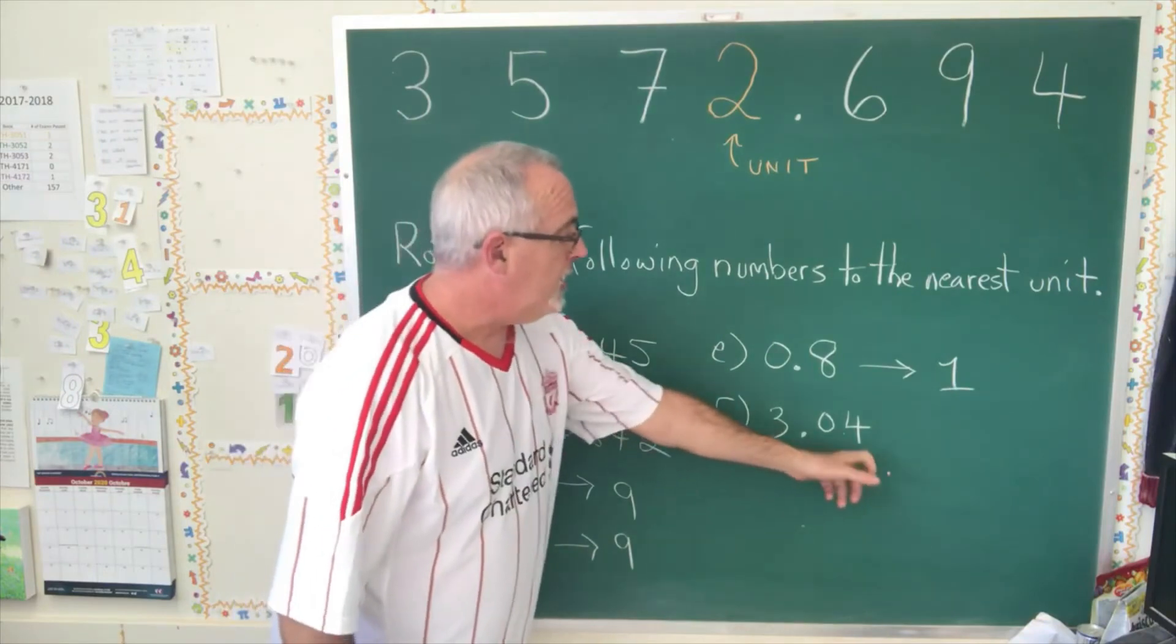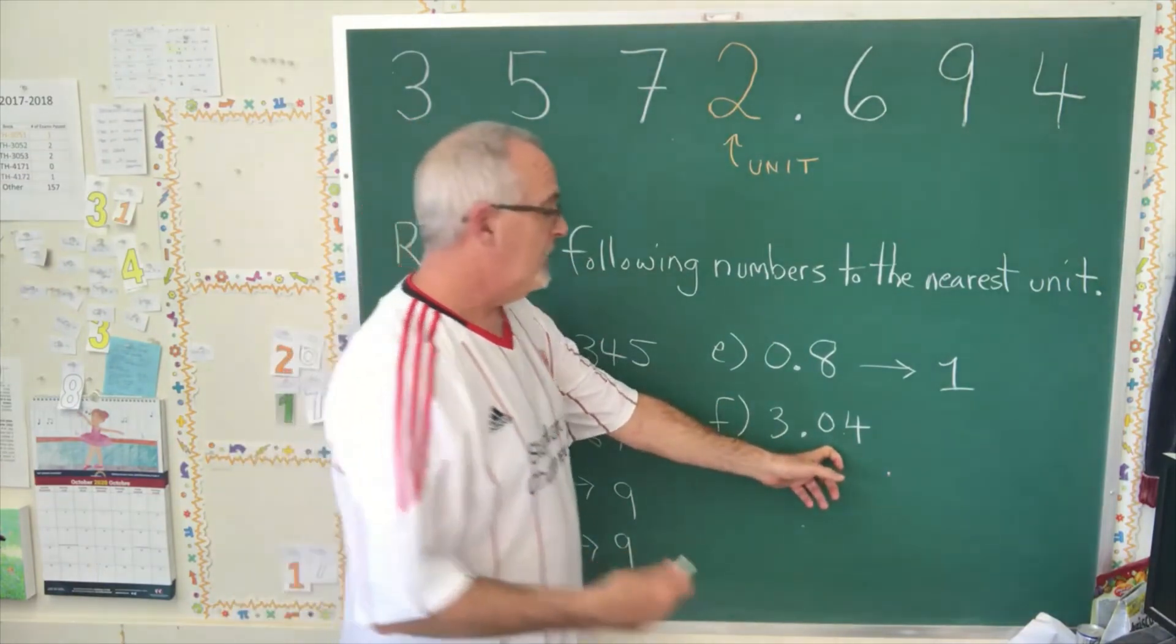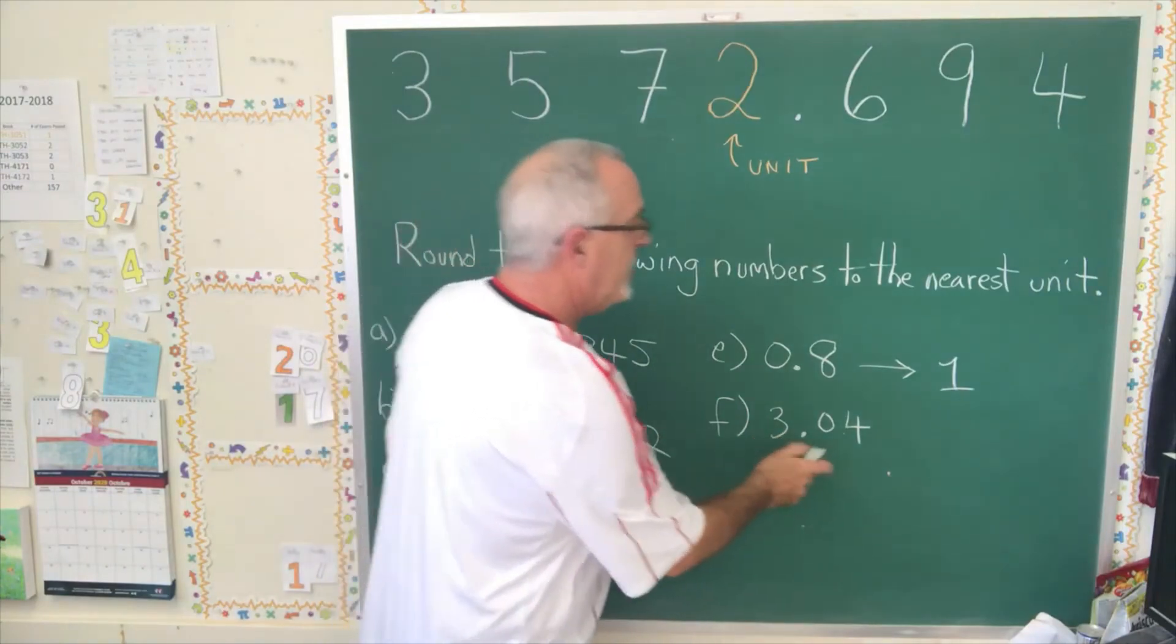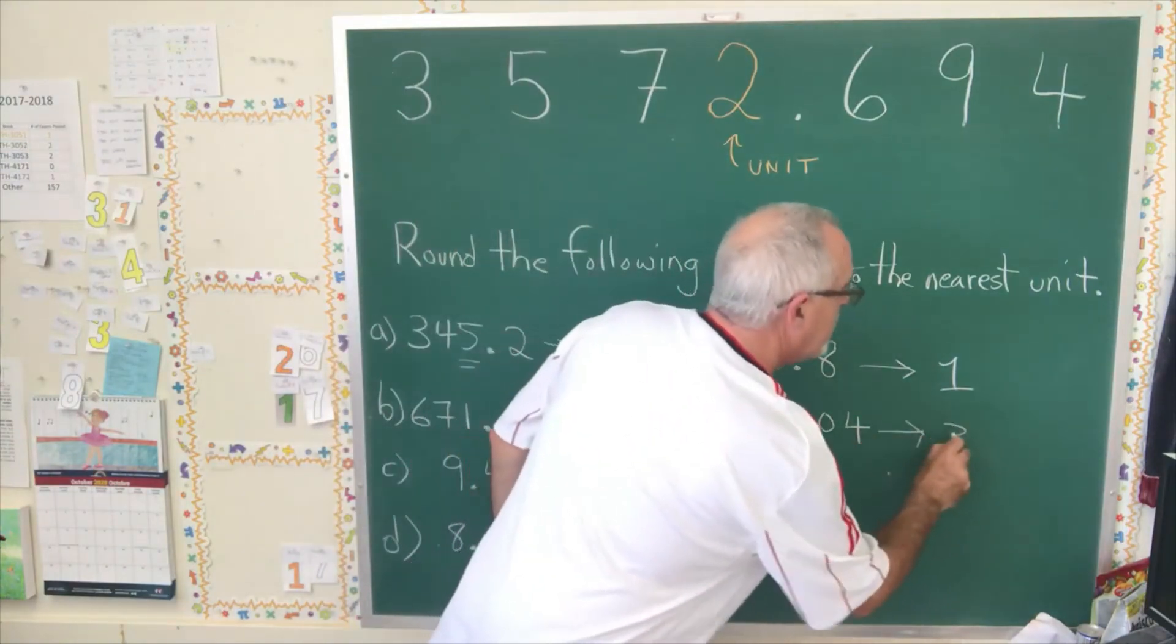3.04, the number in the 10th position is a 0. That is less than 5. Therefore, this rounds to 3.